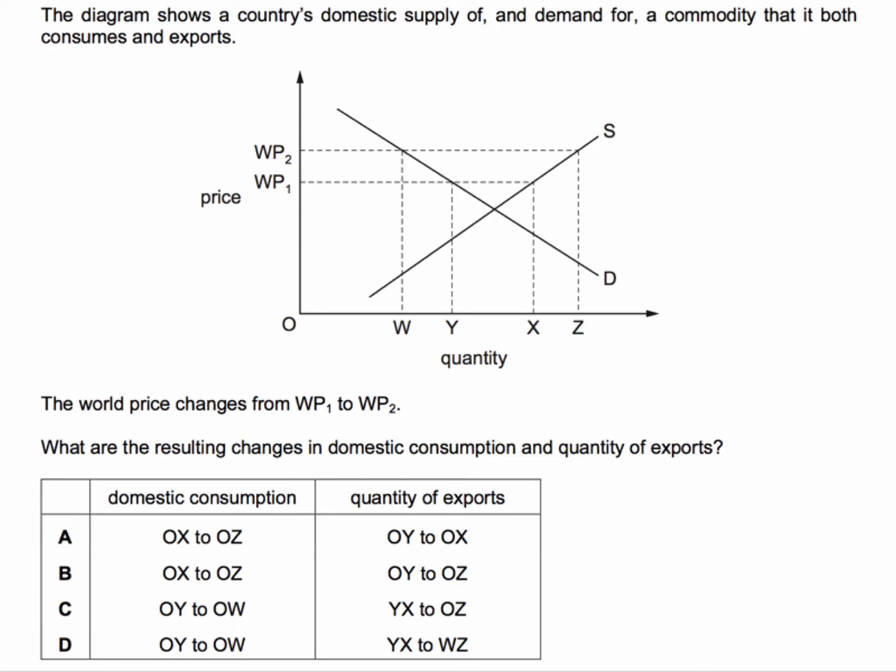We're told the world price goes up from WP1 to WP2. Initially at world price WP1, domestic demand — domestic consumption — is OY, and domestic production is OX. We assume this country takes the world price as the price that dictates its consumption and export decisions. So at WP1, consumption is OY and production is OX.